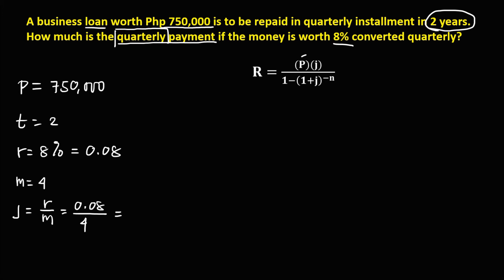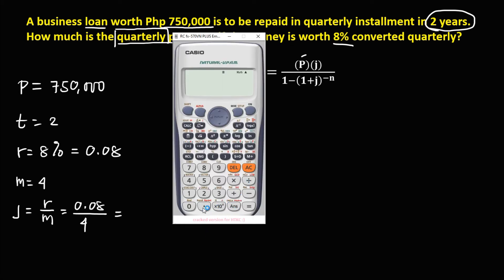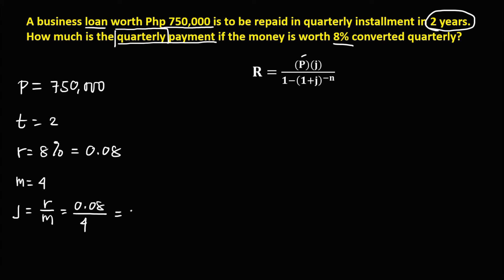So J now, we have 0.08, then divide by 4, equals, so that's 0.02. So J is equal to 0.02.